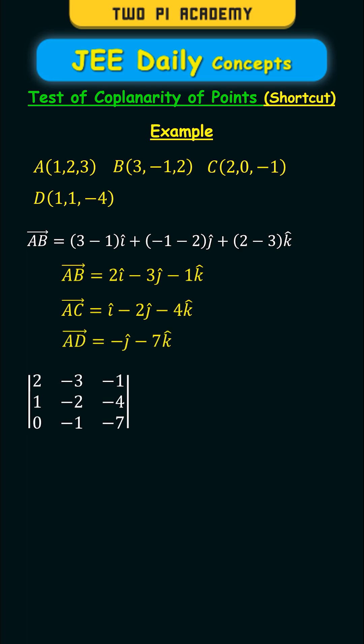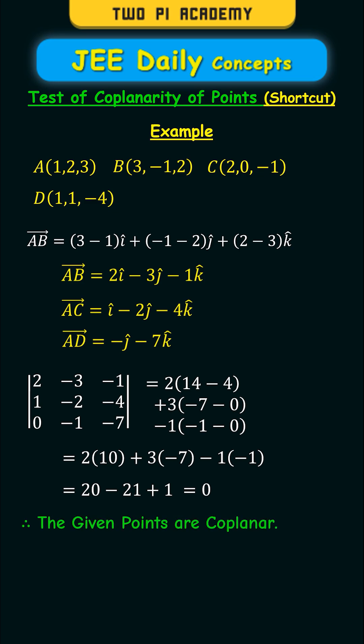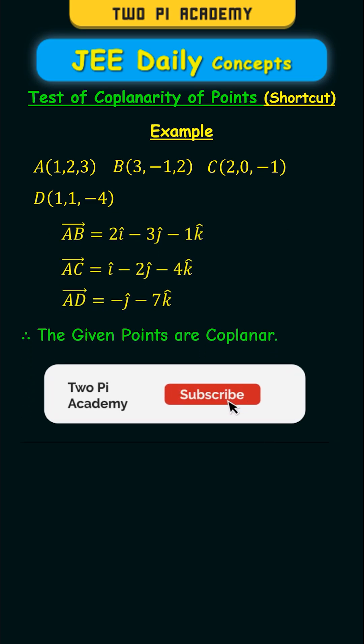And finally by substituting them in our determinant and simplifying you will get the value of zero. So therefore the given points are coplanar to each other.